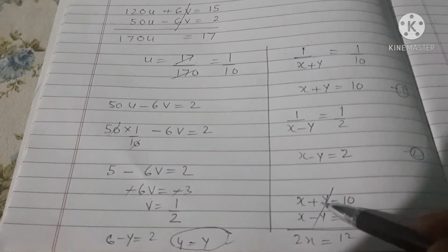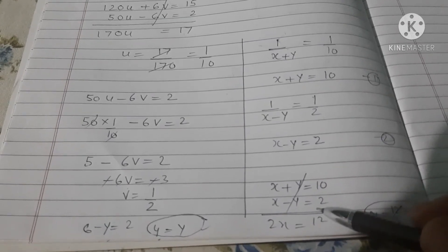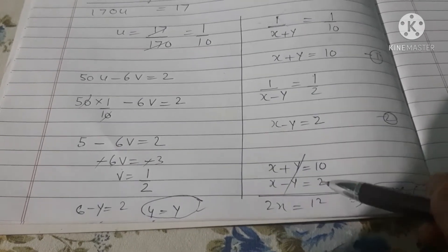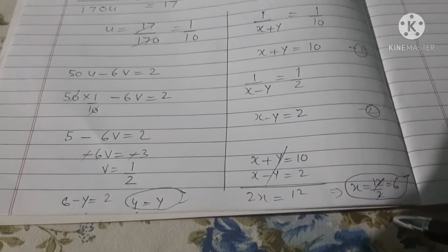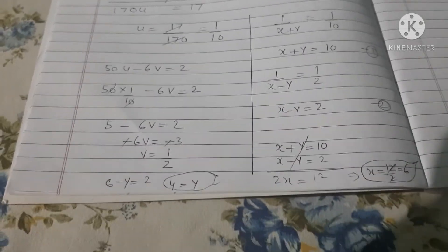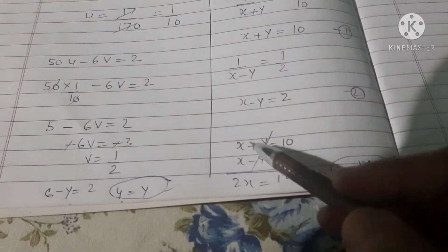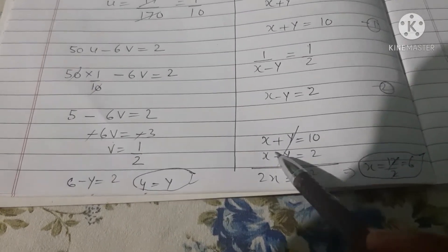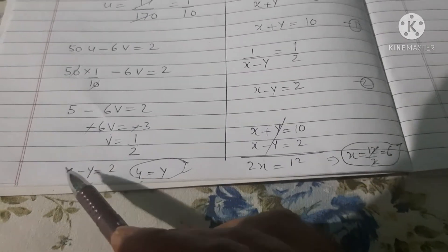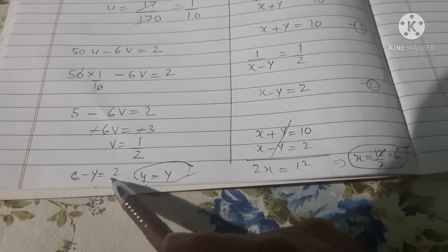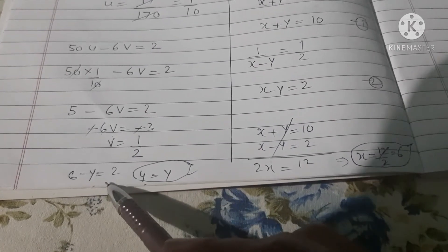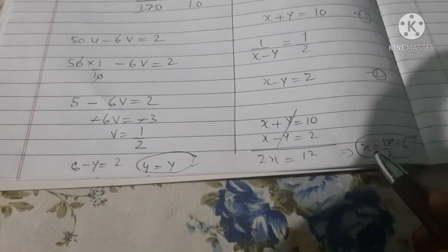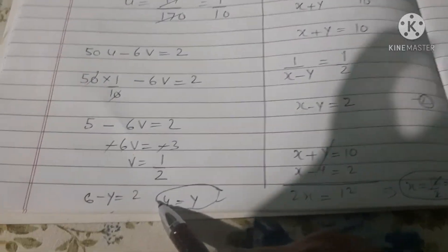Now with x plus y equals 10 and x minus y equals 2, adding the equations cancels plus y and minus y, giving 2x equals 12, so x equals 6. To find y, substitute x equals 6 into x minus y equals 2: 6 minus y equals 2, so y equals 6 minus 2 equals 4. The solution is x equals 6 and y equals 4.